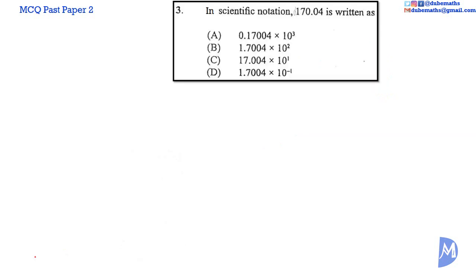170.04 in scientific notation or standard form — we want one digit before the decimal point that isn't zero. So we move the decimal point to get 1.7004 multiplied by 10 to some power. The decimal point is moved two spaces, so we know that will be a 2. 1.7004 multiplied by 10 to the positive 2 moves it right to get back 170.04. So the answer is 1.7004 multiplied by 10 to the positive 2. The answer is B.